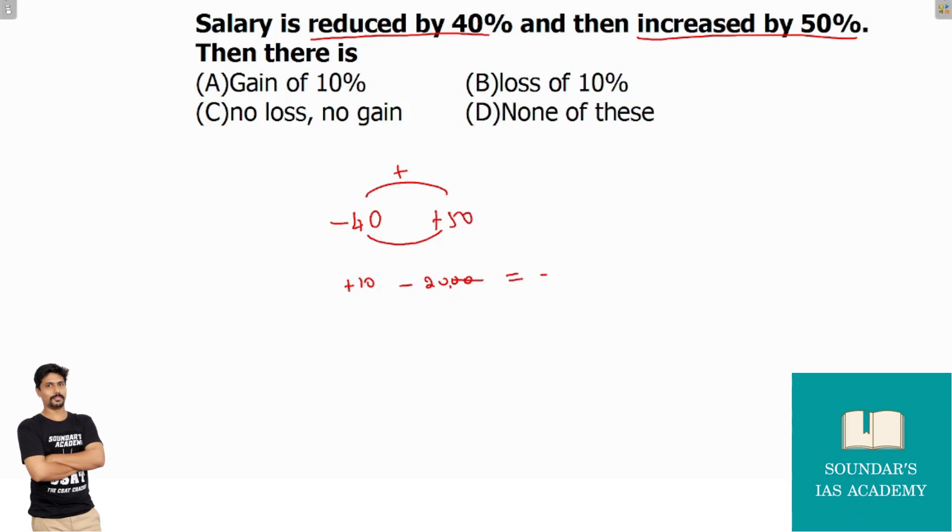If you add plus 10 minus 20, you get minus 10. You will remember: a gain and a loss results in a loss. Now let me explain the steps.